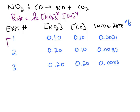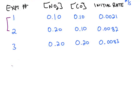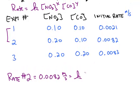For example, experiments one and two keep the concentration of carbon monoxide constant. So experiments one and two tell us the effect of varying the concentration of nitrogen dioxide. Choosing those two experiments lets us write down a ratio. Let's put the second experiment on top — the rate of experiment two is 0.0082 molar per second, which equals k times the concentration of nitrogen dioxide in experiment two, 0.2 molar, raised to the x power, times the concentration of carbon monoxide to the y power.